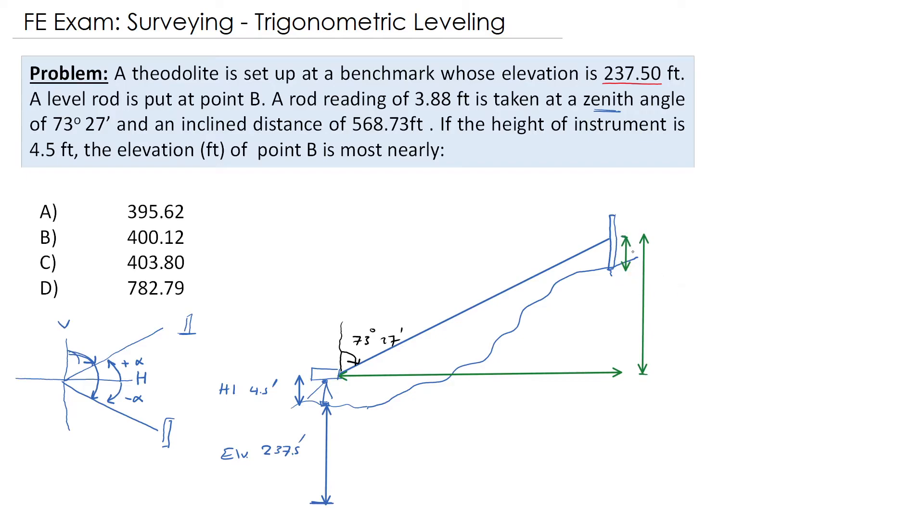And the distance here from here to this point, this is R, the reading on the rod. And this distance here is the difference in elevation, and this is the horizontal distance.